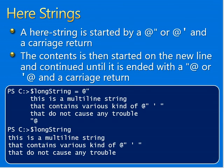A here-string is started by the at-symbol with a double or single quote. The here-string is used to embed large chunks of text inline in a script. This can be powerful when you generate output for another program. When a here-string is displayed it contains all of the lines that were entered. Here-strings have special quoting rules.